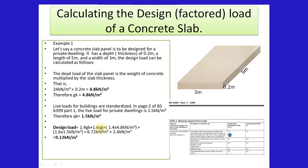So the design load is equal to 1.4 GK plus 1.6 QK, which is equal to 1.4 times 4.8 plus 1.6 times 1.5 kilonewtons per meter squared. Everything now adds up to 9.12 kilonewtons per meter squared. This load is what we use in calculating steel reinforcement for the slab.